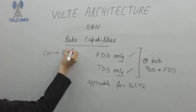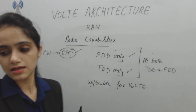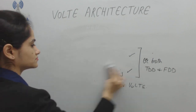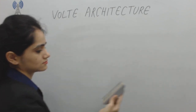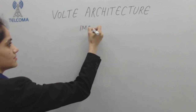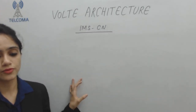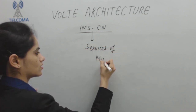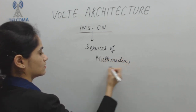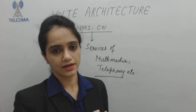In the core network, we have the Evolved Packet Core, which is the core network of the 4G architecture. Next, we have the IMS Core Network — IP Multimedia Subsystem — which provides a service layer including multimedia and telephony services.